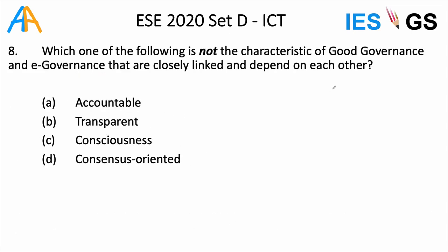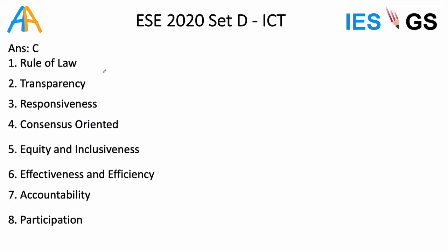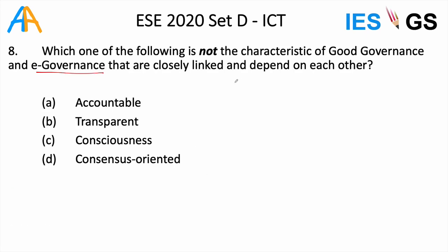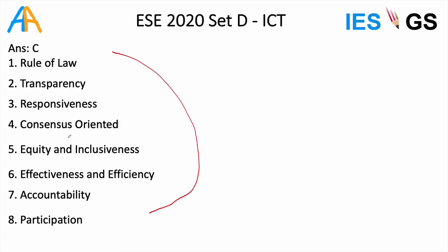The next question asks which is NOT a characteristic of good governance and e-governance, which are closely linked. The eight main characteristics of good governance are: rule of law, transparency, responsiveness, consensus oriented, equity and inclusiveness, effectiveness and efficiency, accountability, and participation. ICT is helpful in all these aspects. Among the options, accountability, transparency, and consensus oriented are characteristics of good governance, but 'consciousness' is not — it has no relation to governance. The answer is C.